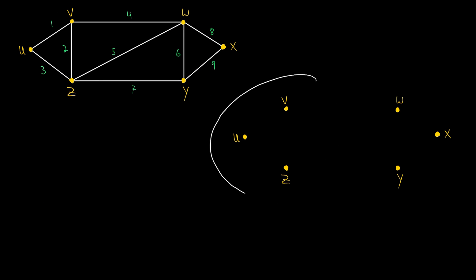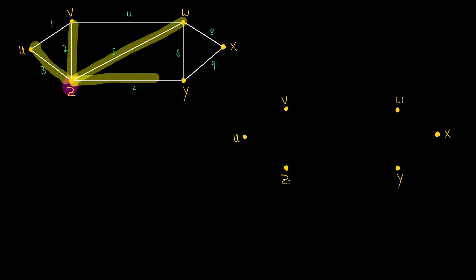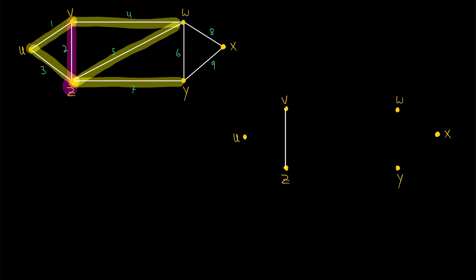Let's give it one more try with another graph. Here is our graph, and here is a copy of the vertices where we can construct our spanning tree. It's straightforward enough that we can do it from memory. First, we pick an arbitrary vertex to start at — let's say vertex Z. Then among all edges incident with Z, we pick the one of minimum weight — that's this edge of weight 2 joining Z and V. Now into step 3: we select an edge of minimum weight sharing exactly one vertex with the edges already selected — that's the edge of weight 1 joining U and V.